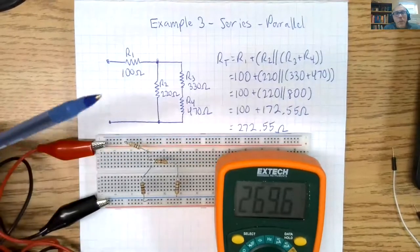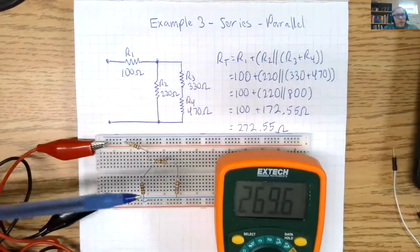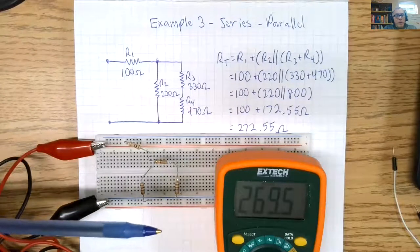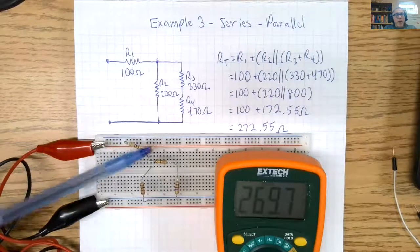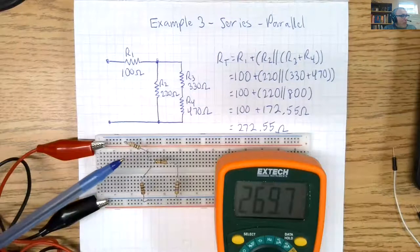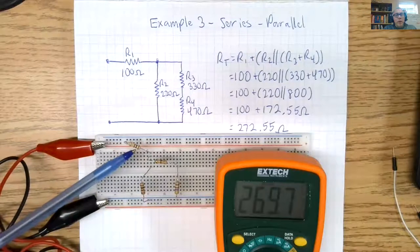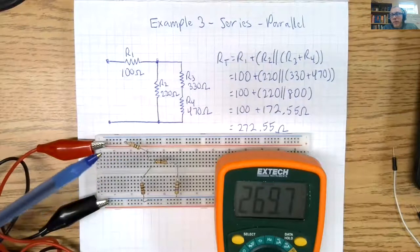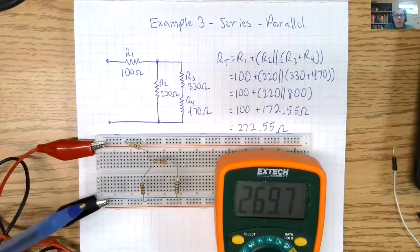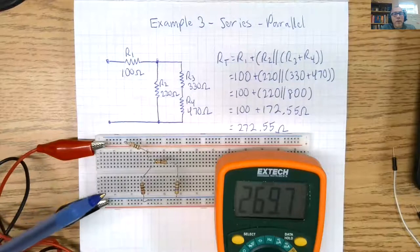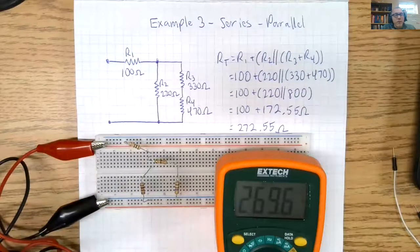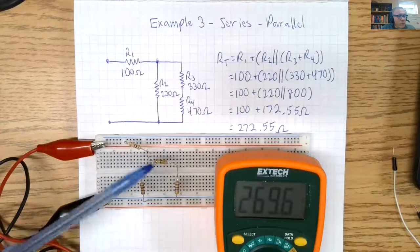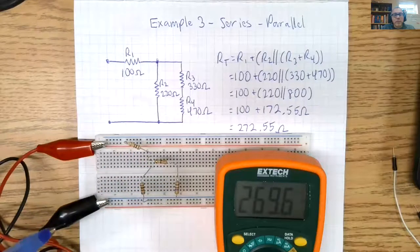So before you get started, every lab of any respectable electrical program will tell you to measure each resistor to confirm you have the right components. So if everything is shooting up super high, that might mean that instead of a brown, black, brown, 100 ohms, that you might have mistakenly gotten a brown, black, red for 1K. Or a brown, red, red for 1.2K. You just need to make sure each resistor is correct.